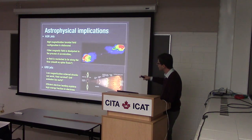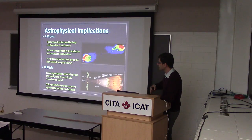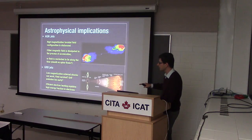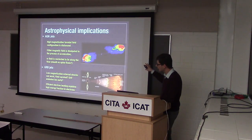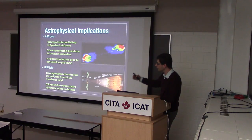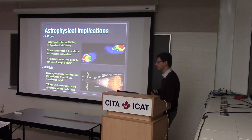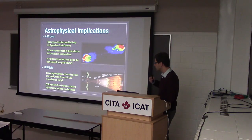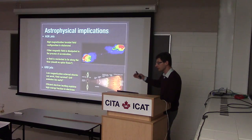For GRBs, the low-magnetization external shocks seem to work quite well — self-generated Weibull turbulence seems to accelerate particles efficiently. There is an issue of how long this field survives behind the shock. The extrapolation of what we're seeing suggests it probably will survive if there is sufficient particle acceleration, though we haven't been able to demonstrate this conclusively.